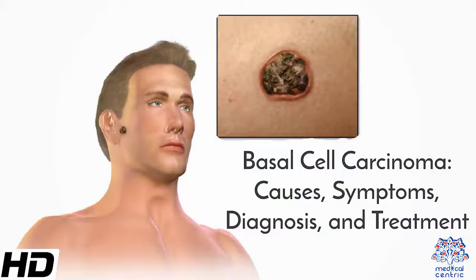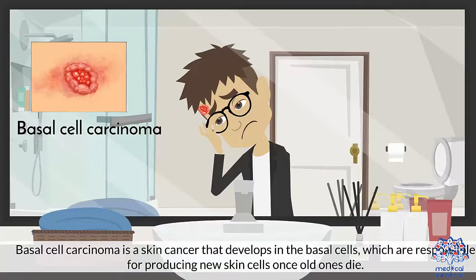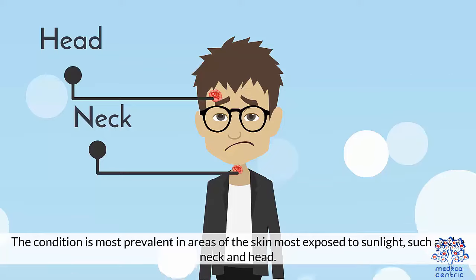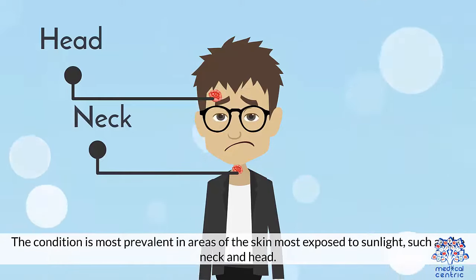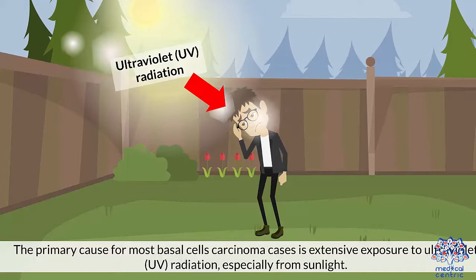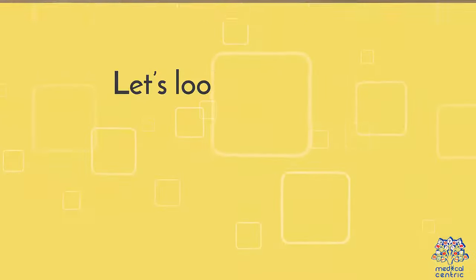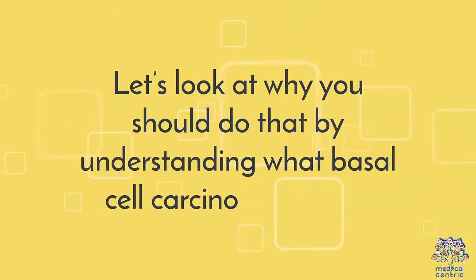Today's topic is Basal Cell Carcinoma: Causes, Symptoms, Diagnosis, and Treatment. Basal cell carcinoma is a skin cancer that develops in the basal cells, which are responsible for producing new skin cells once old ones die. The cancer typically appears as a small transparent bump on the skin, however it can take several other forms. The condition is most prevalent in areas of the skin most exposed to sunlight, such as the neck and head. The preliminary cause of most basal cell carcinoma cases is extensive exposure to ultraviolet UV radiation, especially from sunlight. You can decrease the chances of getting basal cell carcinoma by avoiding exposure to the sun and applying sunscreen.